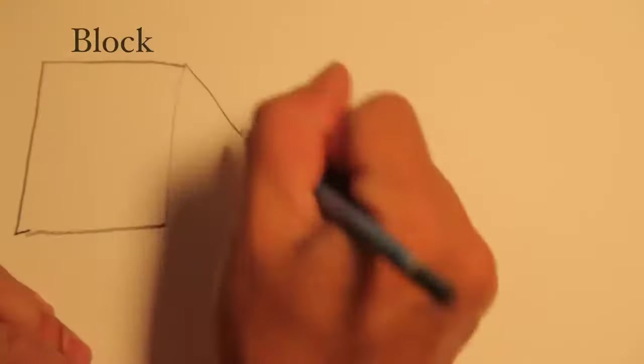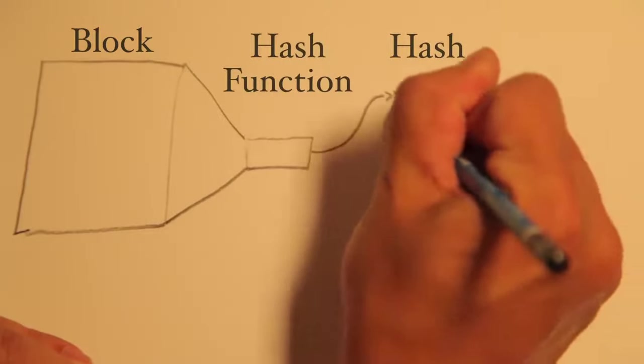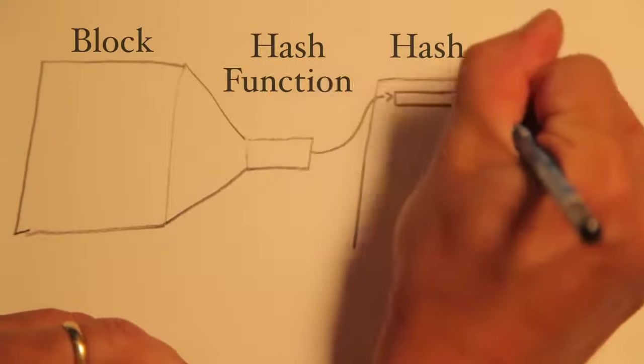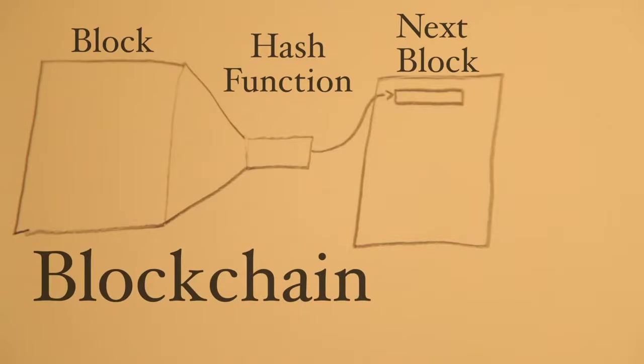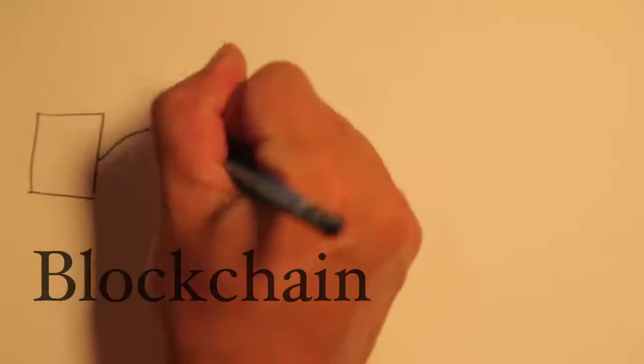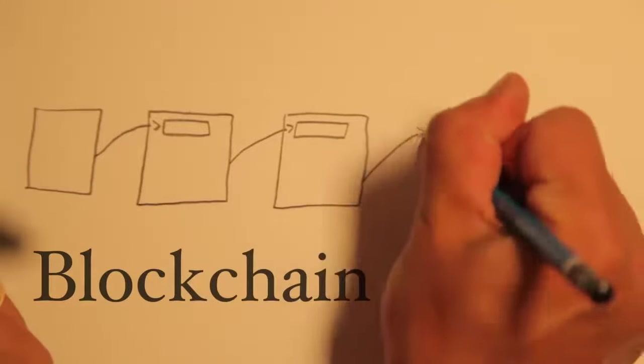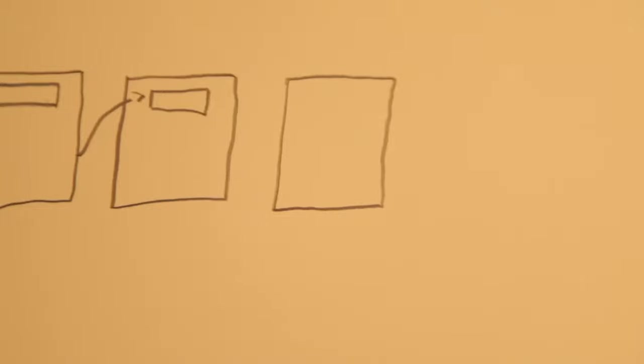But instead of simply downloading the block, it actually attaches to the block by calculating the hash of that block and including it within the next block of new transactions they are working to mine. This is how a chain is created between blocks, which we call a blockchain. It creates an information dependency between all blocks. If you change one symbol in any block within a blockchain, that change will propagate forward to the very front. So it locks the history of all transactions in place.